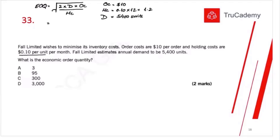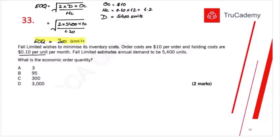Now let's calculate the EOQ. Put in the values: square root of (2 × 5,400 × $10) ÷ $1.20. The result is 300 units. This means 300 units is the optimal order size for this company — placing orders of 300 units will minimize their total inventory-related costs.